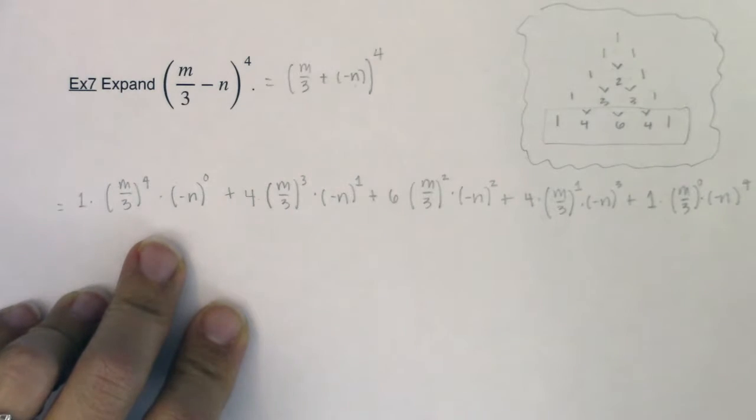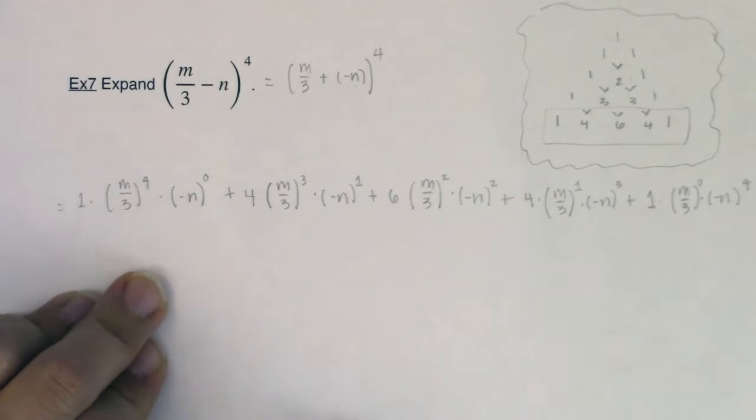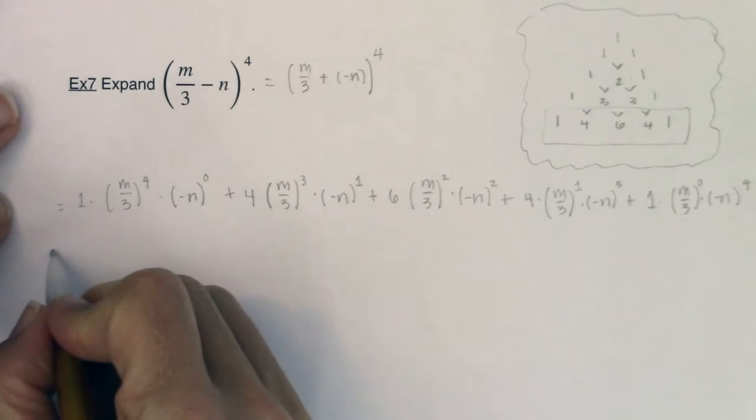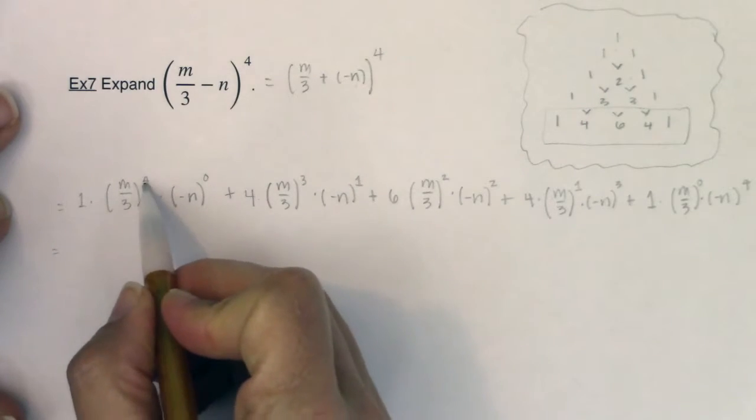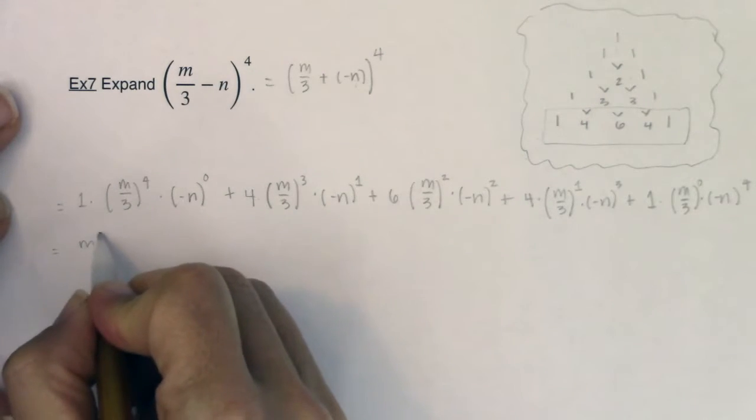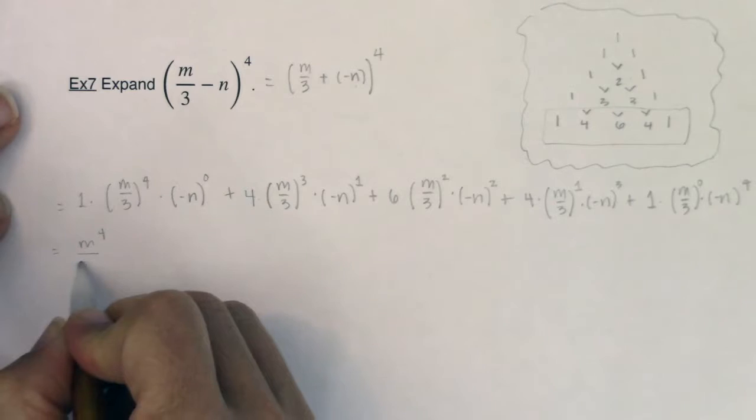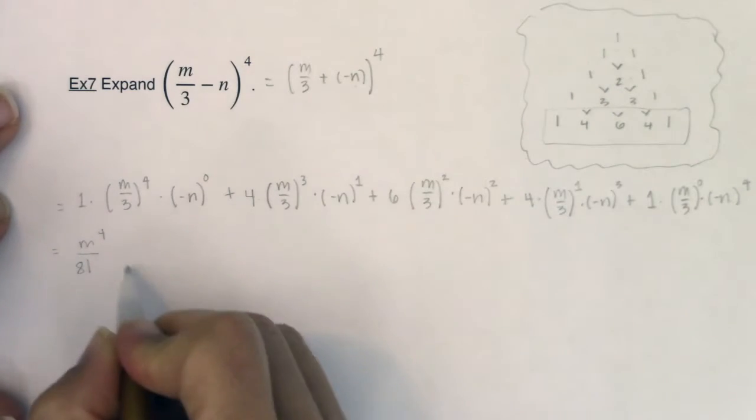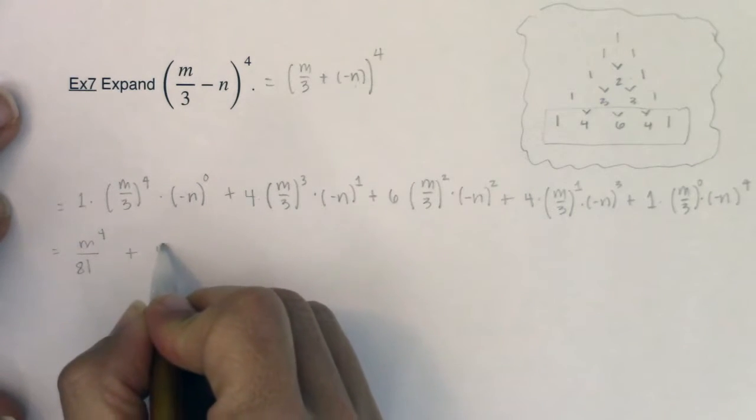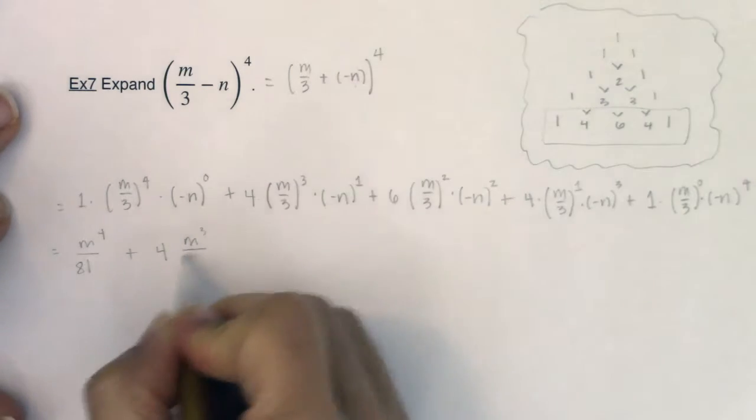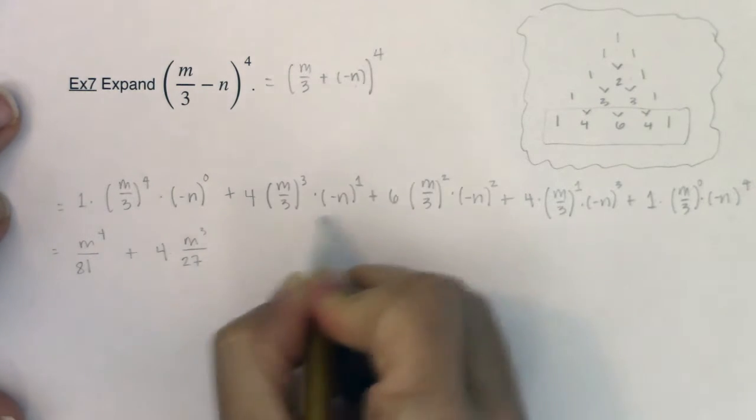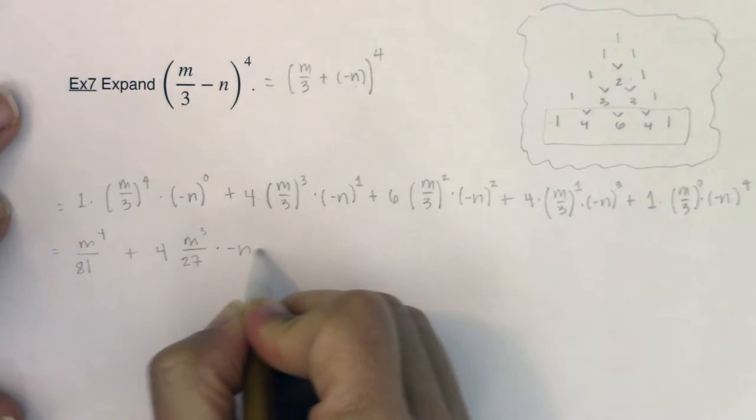Okay, so let's take a look at simplifying this. So we're going to go with this is going to be m to the fourth over, well, 3 to the fourth is 81. And this term is going to go away. So we will have a 4 here. m cubed is m cubed. 3 cubed is 27 times a negative n.